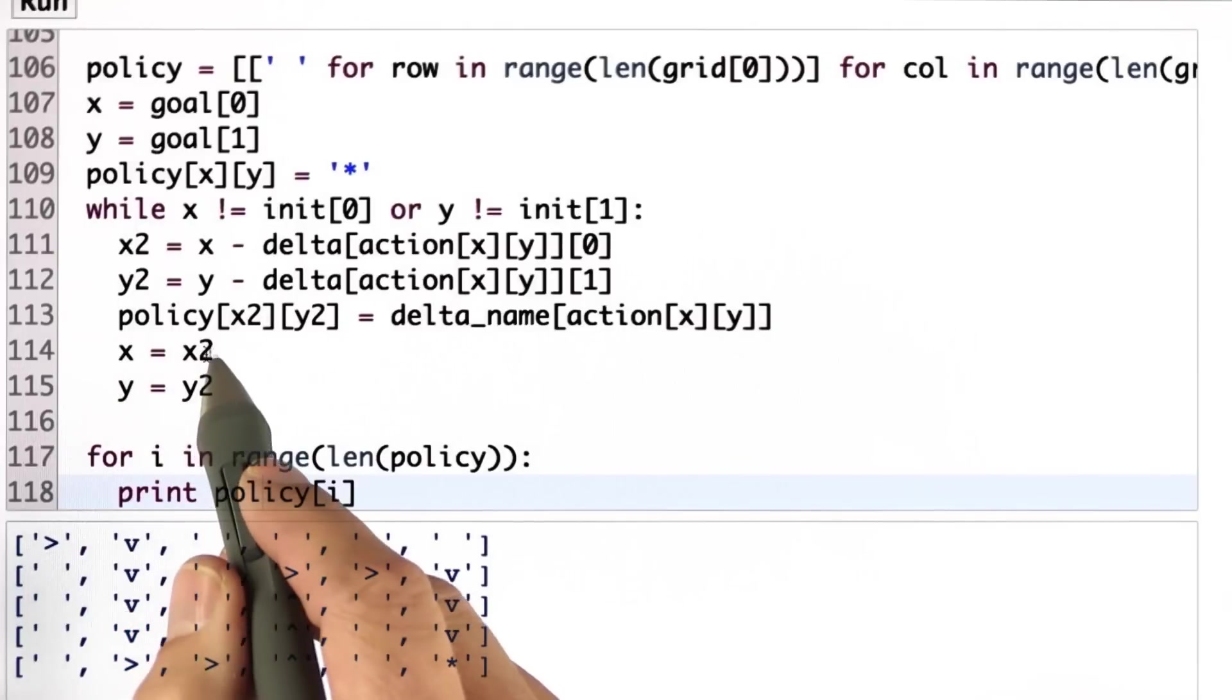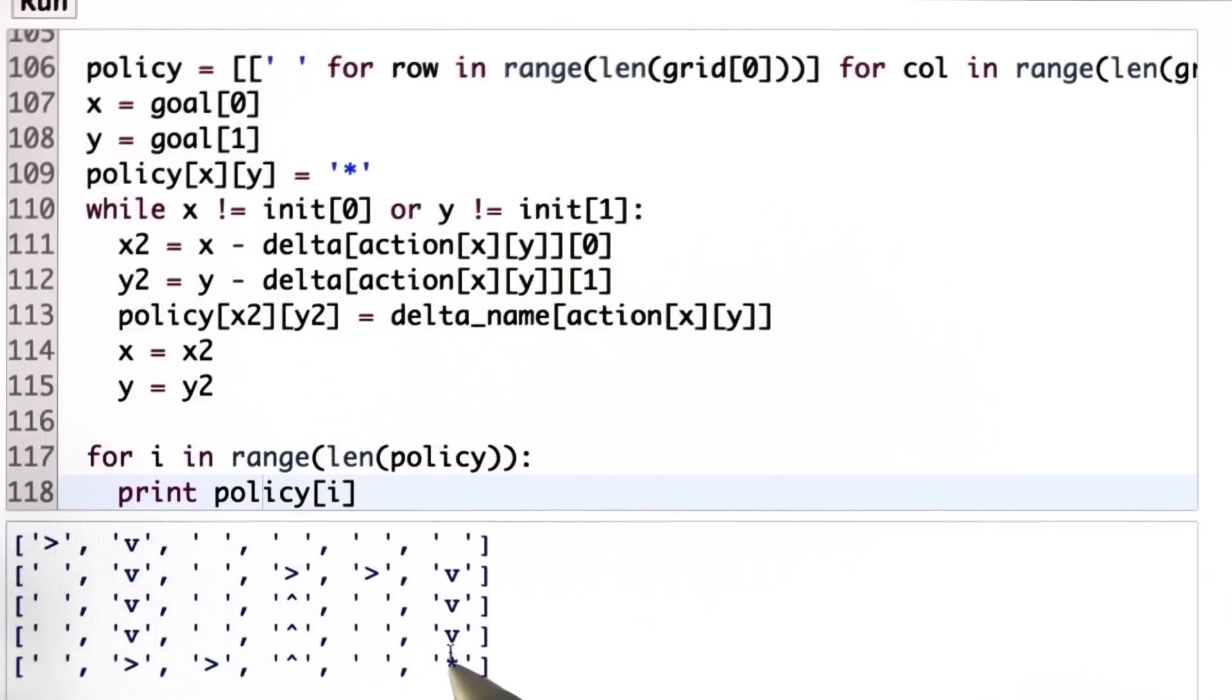I set x and y to the state x2, y2, and I then go a step further. In doing so, I will reverse the path step by step, print the associated action, and get exactly this table over here.